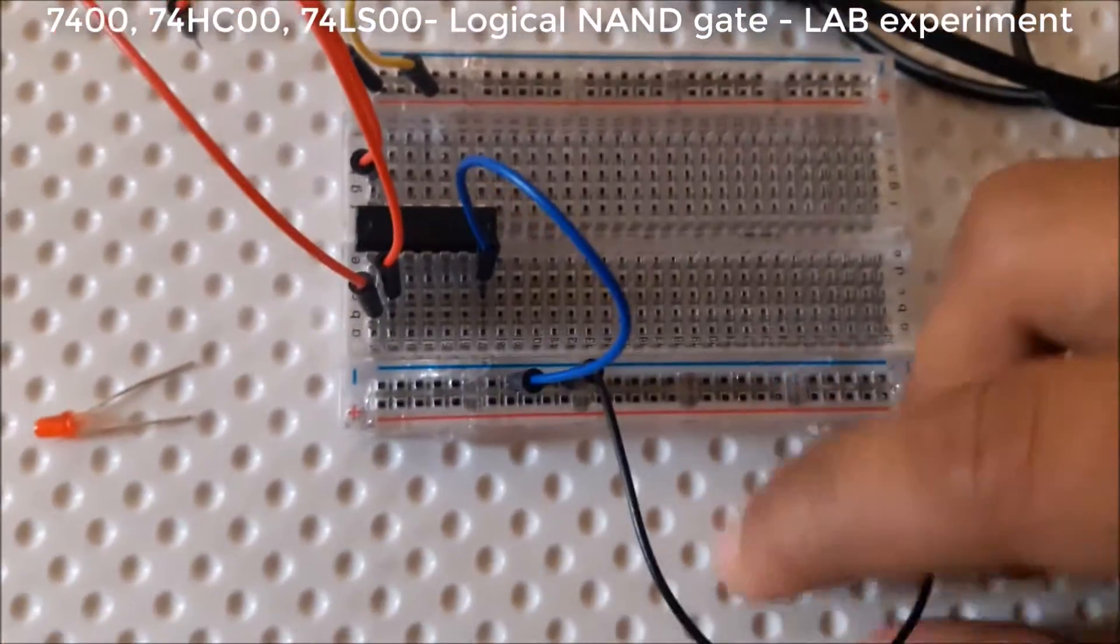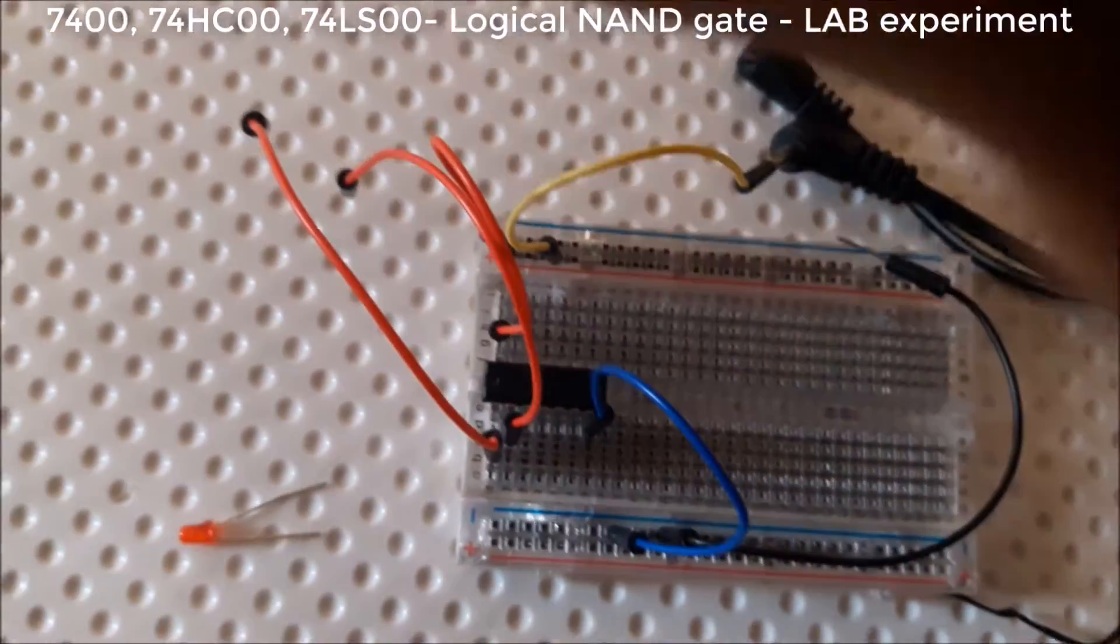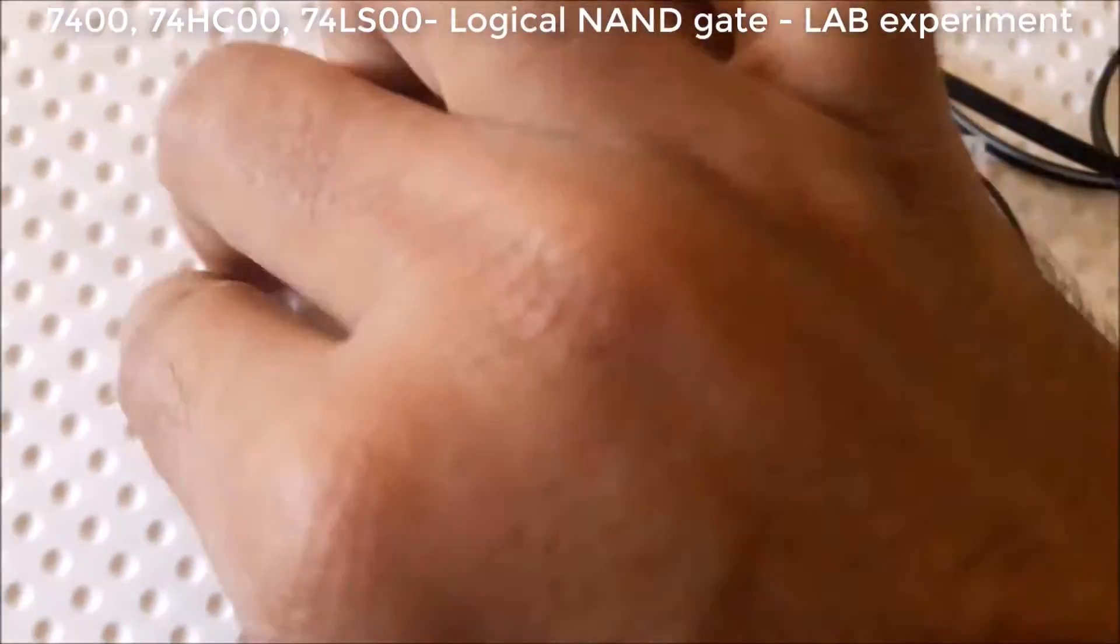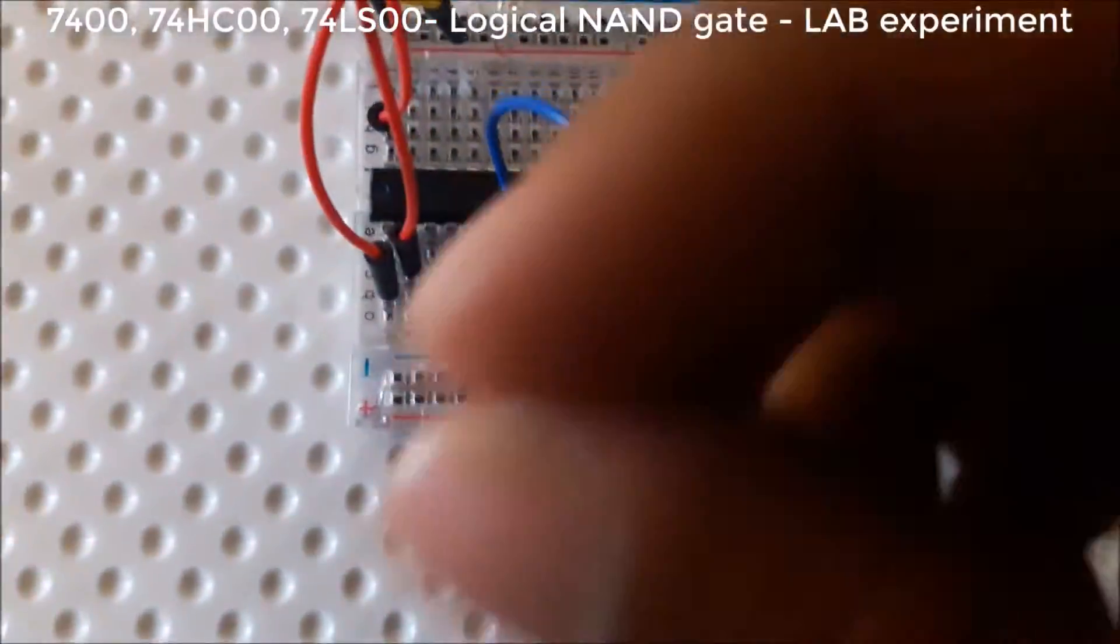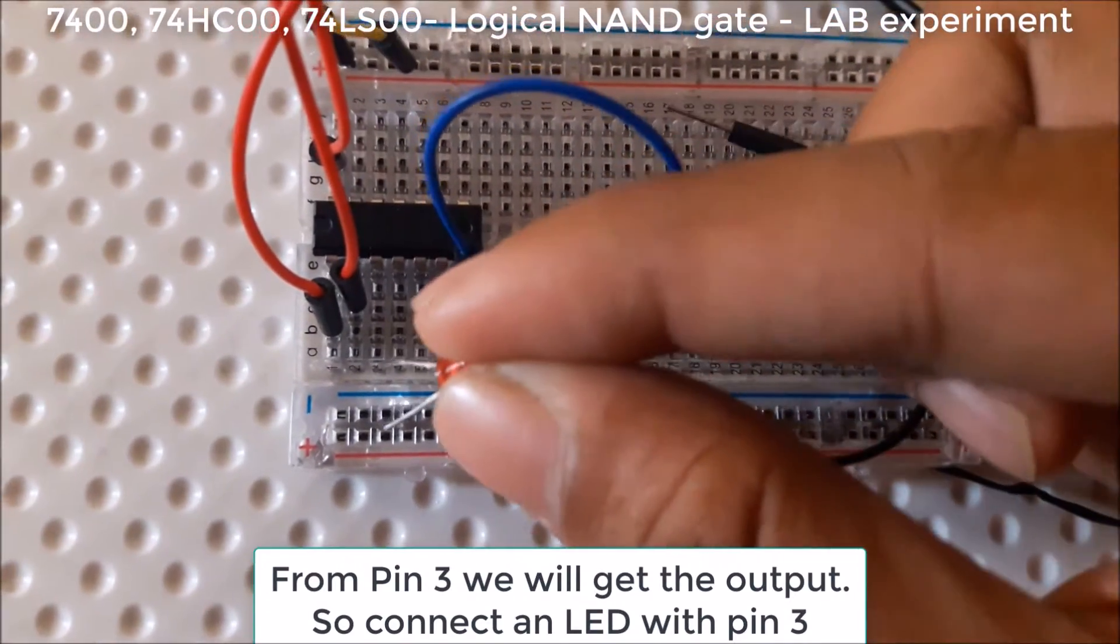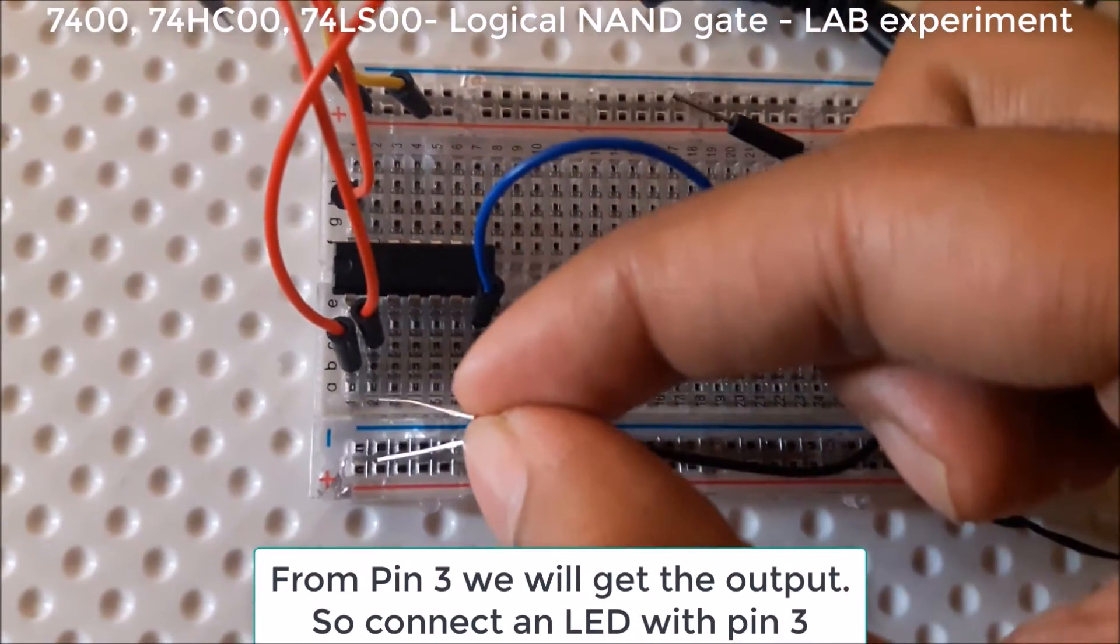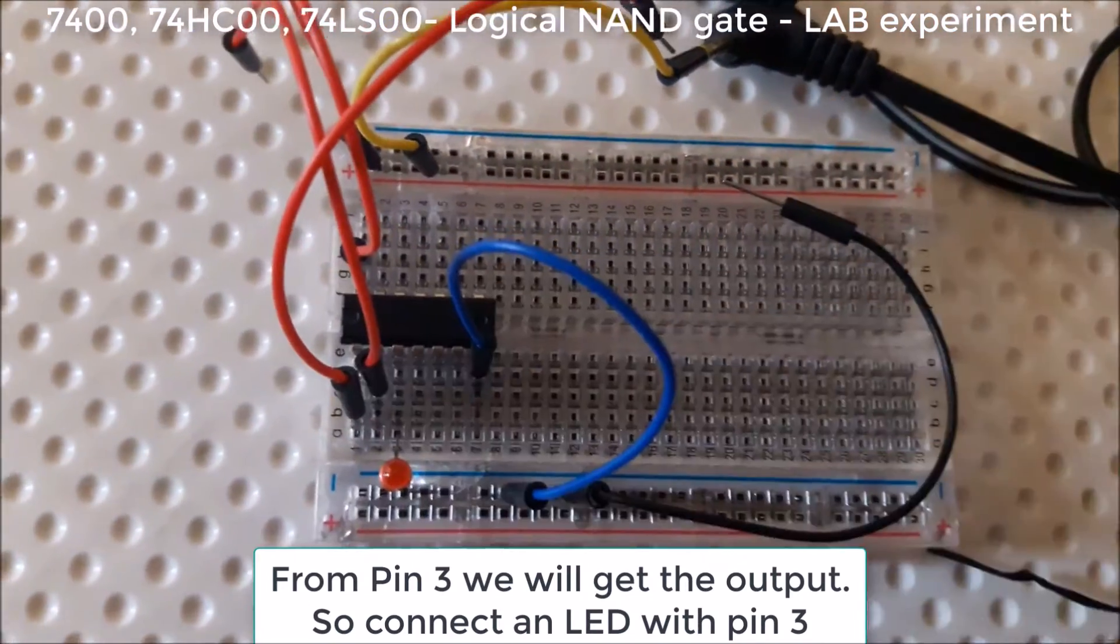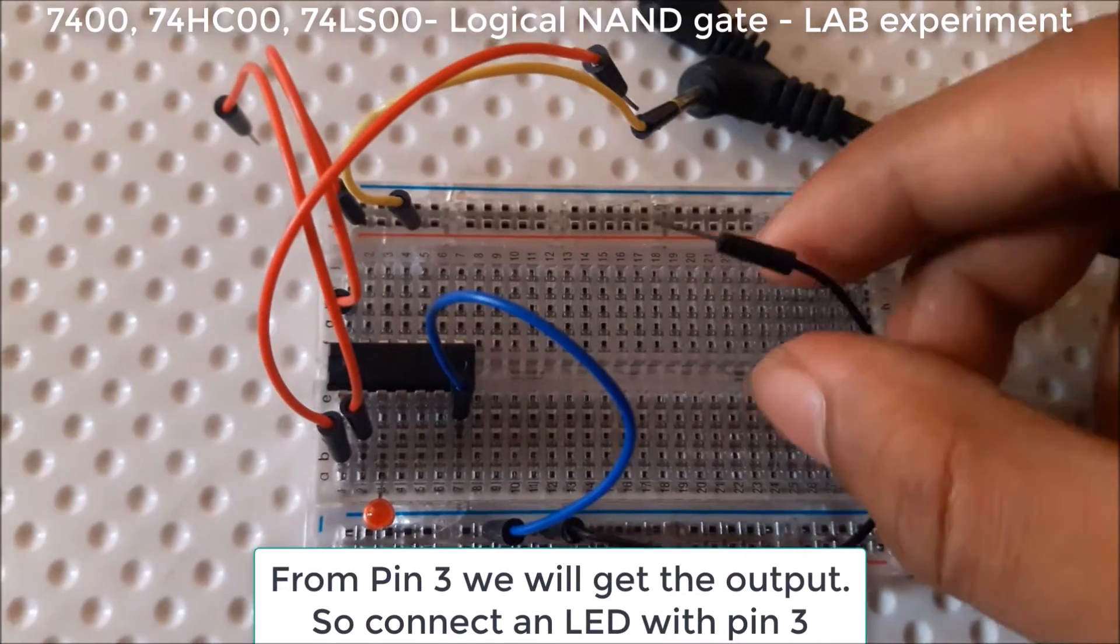Let's see what happens for the input 0. From pin 3 we will get the output. So I am connecting LED with pin 3.